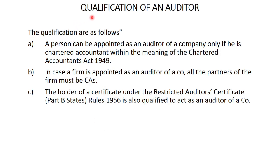Now, having studied the meaning, we will move to the qualifications of an auditor. What are the qualifications required for appointing someone as an auditor of a company? The first qualification is that a person can be appointed as an auditor of a company only if he is a Chartered Accountant within the meaning of the Chartered Accountants Act, 1949.